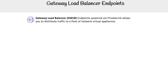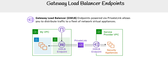Gateway load balancer endpoints are powered via private link and allow you to distribute traffic to a fleet of network virtual clients. Similar to previous diagrams, but a bit more funky — you have an ENI which acts as your endpoint for the gateway load balancer. Traffic comes in from the internet and is sent over to the gateway load balancer. Note: it's labeled as 'endpoint' in the diagram, but it's really just a load balancer.